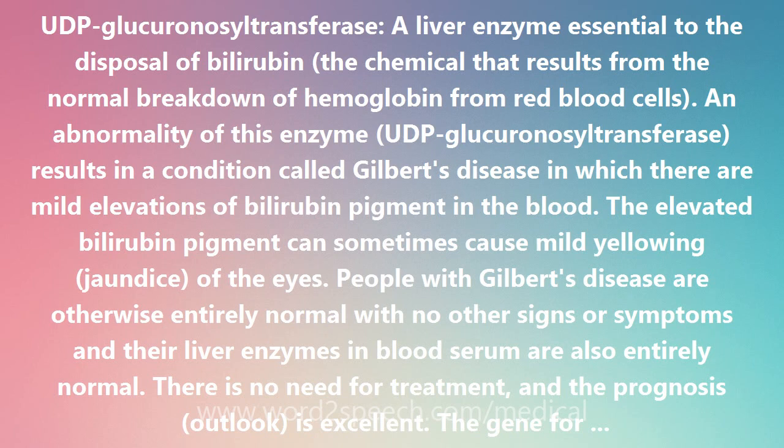An abnormality of this enzyme, UDP-glucuronosyltransferase, results in a condition called Gilbert's disease, in which there are mild elevations of bilirubin pigment in the blood. The elevated bilirubin pigment can sometimes cause mild yellowing of the eyes. People with Gilbert's disease are otherwise entirely normal with no other signs or symptoms, and their liver enzymes in blood serum are also entirely normal.